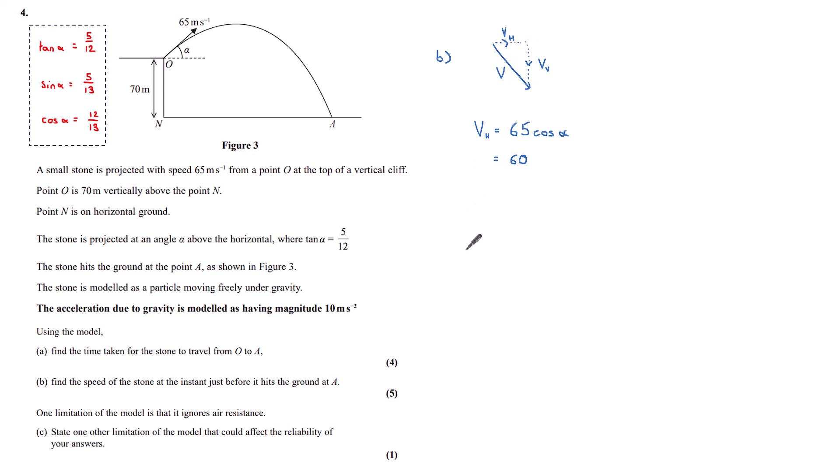I can find the vertical component by looking again at SUVAT. And since we're going down, let's take downwards to be positive this time. And so we know now our initial speed to be negative 65 sin alpha, because that initial speed is upwards and I'm taking down to be positive this time. V is what I want to find, which is the speed or the vertical component of speed with which it hits the ground. Acceleration due to gravity is 10. And again, this is positive because downwards is positive this time. And we've calculated that it takes seven seconds to get from O to A.